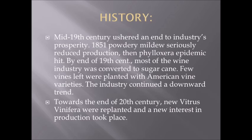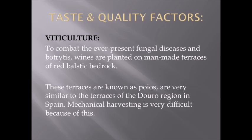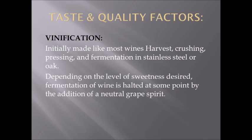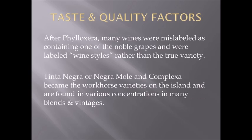Vinification of Burgundy: normal winemaking practices; chapitalization is permitted; single varietal wines — nothing is blended; small vineyard blocks, small production, gentle extraction, and care taken with Pinot Noir; rain is a hazard. Varietals — red: Pinot Noir and Gamay; Gamay dominates in Beaujolais; red makes up 37%. White: Chardonnay and Aligoté — Chardonnay dominates in Chablis — whites make up 63%.